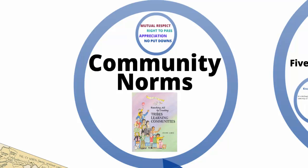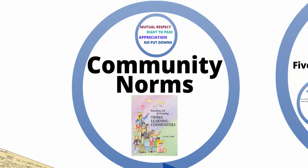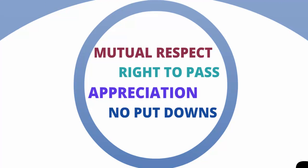What are our community norms? In face-to-face classes, there are several key points developed by Gibbs through the Tribes program for developing communities. These four elements are mutual respect, right to pass, appreciation, and no put-downs. For us to have meaningful discussions and debates about some of the controversial topics we're discussing, it's important that all of us adhere to these community norms.